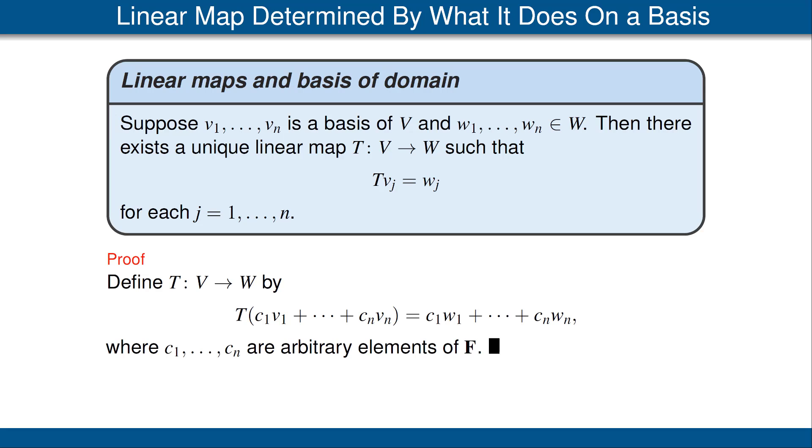Let's look at the idea of the proof of this theorem. Because v_1 up to v_n is a basis of V, every vector in V can be written in a unique way as a linear combination of v_1 up to v_n. In other words, we can write any vector v as some constant c_1 times v_1, plus another constant c_2 times v_2, up to plus another constant c_n times v_n. We define T of that linear combination to be c_1 w_1 plus etc. up to c_n w_n. It's easy to check that with this definition of T, T is linear. And furthermore, T of each v_j is equal to w_j, because to define T(v_j) we look at the linear combination where we take the coefficient c_j to be 1 and all the other c's to be 0.